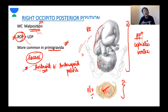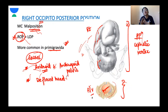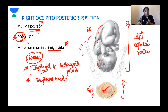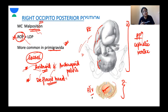Another important cause of right occipito-posterior position is a deflexed head. When the head deflexes, larger diameters try to enter the pelvis and the head finds a position where it is easier to negotiate. The android, anthropoid, and even gynecoid pelvis all have more space posteriorly, so the occiput preferentially goes to the posterior side. A deflexed head thus favors an occipito-posterior position, and among occipito-posterior positions, the right is the more common one.